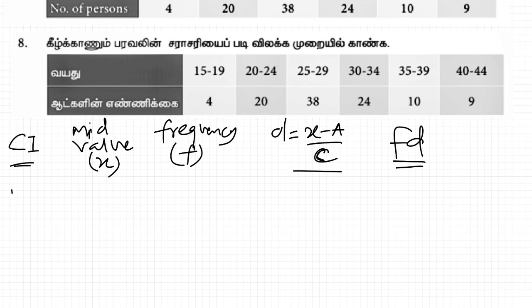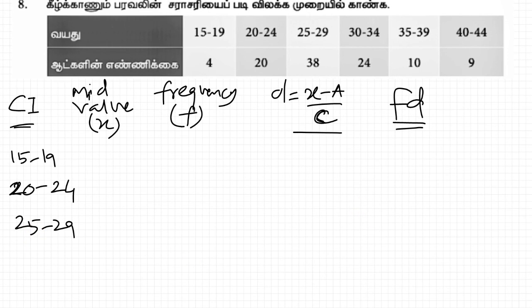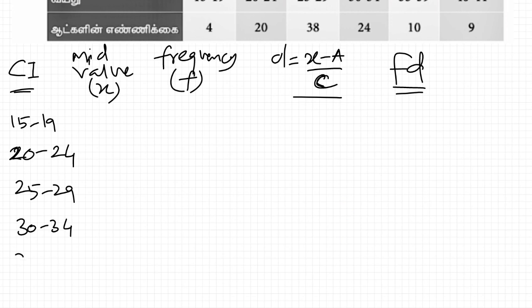Class interval: 15 to 19, 20 to 24, then 25 to 29, 30 to 34, 35 to 39, then 40 to 44.